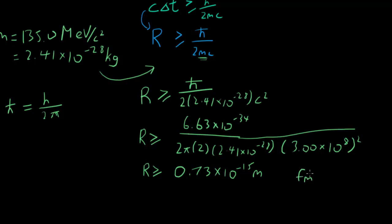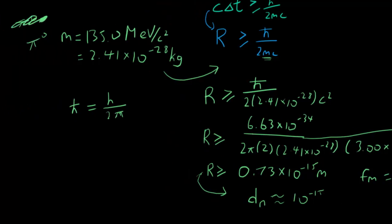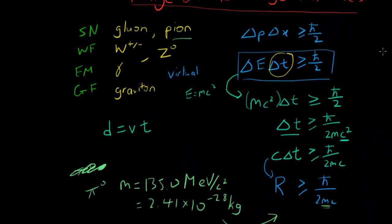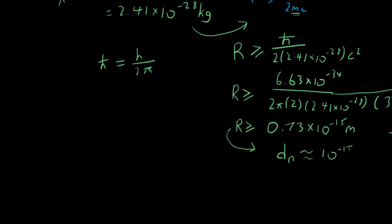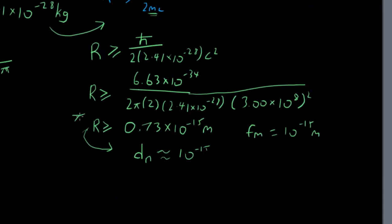So it's about in the range of a femtometer, which is about 10⁻¹⁵ meters. The diameter of a nucleus is approximately in the range of a femtometer. This makes sense, right? Because the pion mediates the strong nuclear force, which is the force that holds the nucleus together. So the range of the force carrier has to be approximately the range of the nucleus.